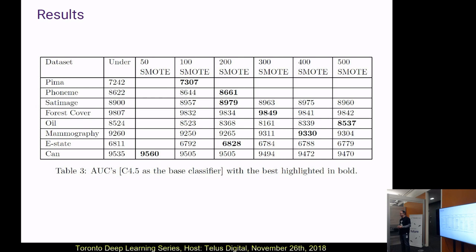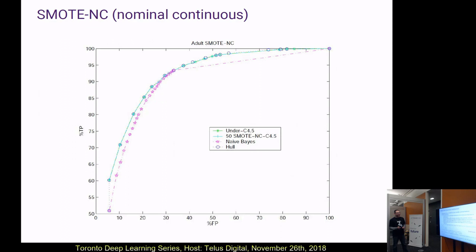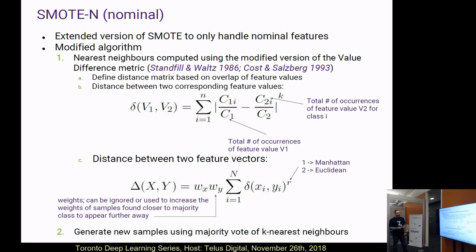Can we go to where you show the distance formula? So how does that work? There are some feature vectors v1 and v2 you want to compute a distance for, and you're summing over the number of classes with some absolute distance. What are the ratios? Can we go through an example? Let's say you have two classes — one has 100 samples, one has 200.